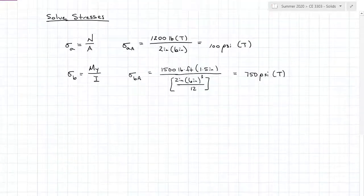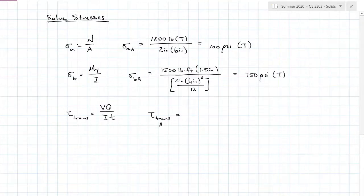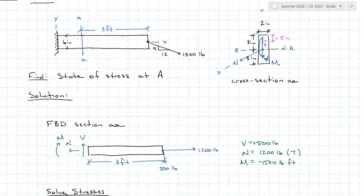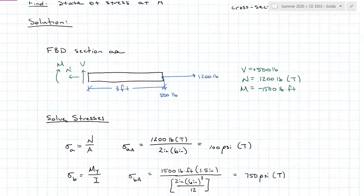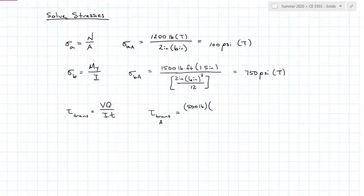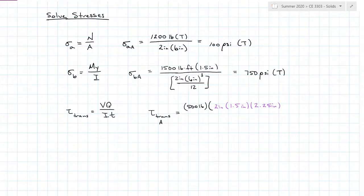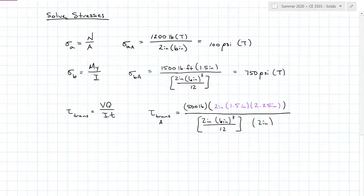The last internal force is shear, so I need a transverse shear calculation. My transverse shear at A equals the internal shear force, 500 pounds, times the first moment of area Q above A. Drawing my shear line at A and taking the area above: that gives a base of 2 inches, a height of 1½ inches, and a distance from the centroid of A-prime to the neutral axis of 2¼ inches. Divided by the same moment of inertia — 2 inches by 6 inches cubed divided by 12 — and the shear-line thickness of 2 inches. That gives a transverse shear value of 46.875 psi.